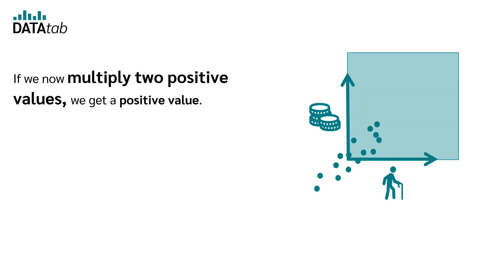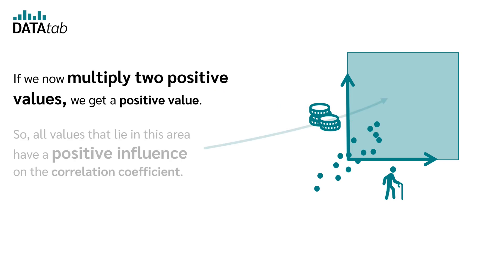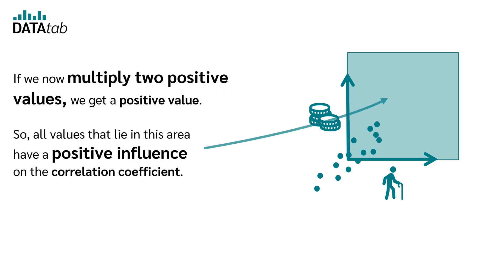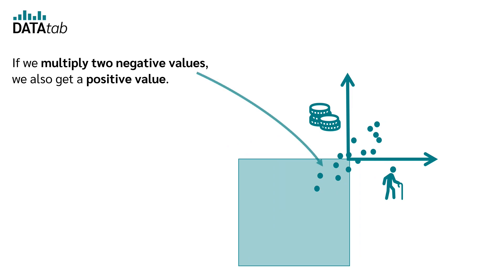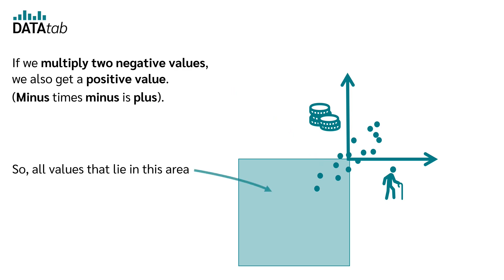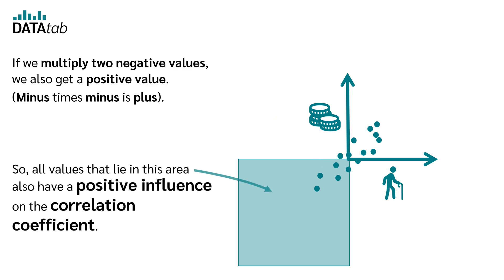If we now multiply two positive values, we get a positive value. So all values that lie in this area have a positive influence on the correlation coefficient. If we multiply two negative values, we also get a positive value — minus times minus is plus. So all values that lie in this area also have a positive influence on the correlation coefficient.